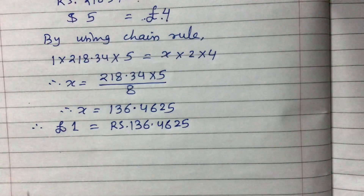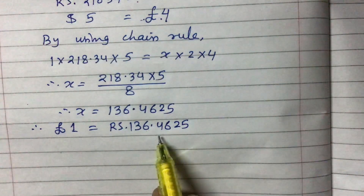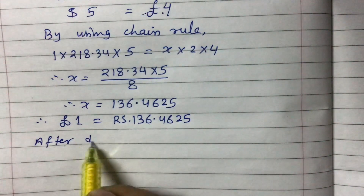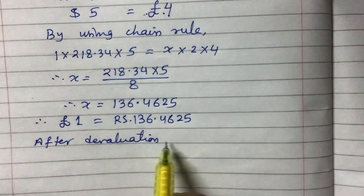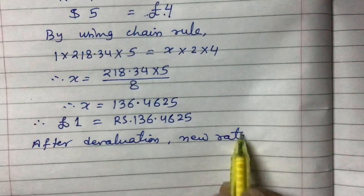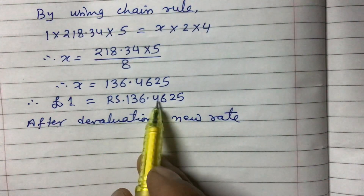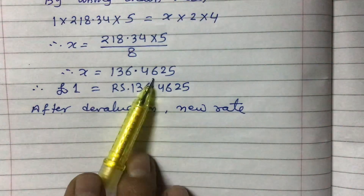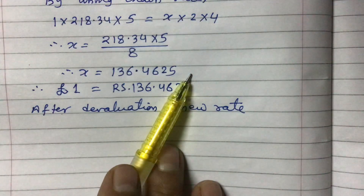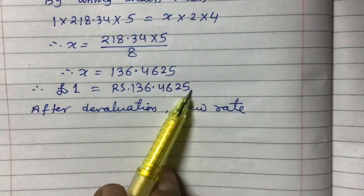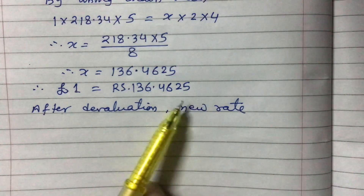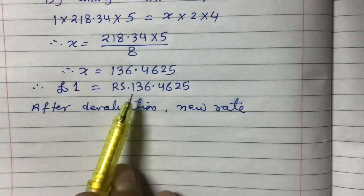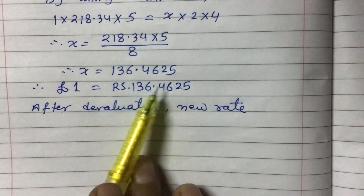Now after devaluation, what is the new rate? Nepalese currency has been devaluated, meaning to buy 1 pound we have to pay 10% more Nepalese currency. Listen carefully: devaluation means the value of money has decreased. Most people think we subtract, but that is wrong. Because our Nepalese currency has been devaluated, we have to pay more money to buy one pound, so we add 10% more.